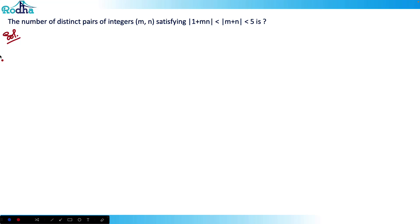Let's look at this next question from algebra from CAT 2021 Slot 3 — a very good question of algebra, a difficult question actually. It's from the modulus topic. The question says: the number of distinct pairs of integers m, n satisfying |1 + mn| < |m + n| < 5.